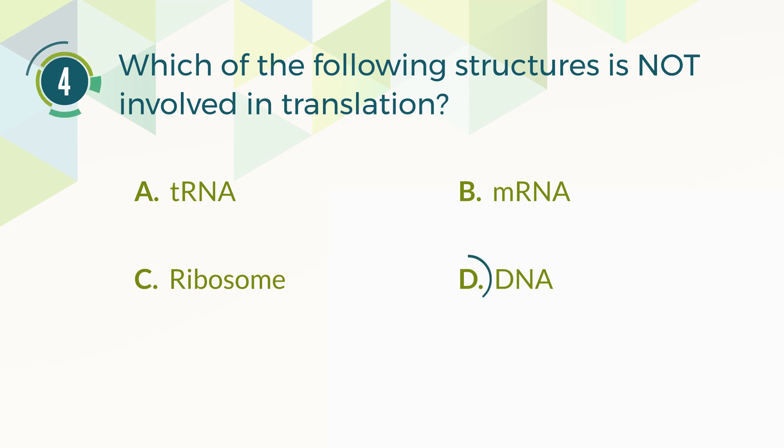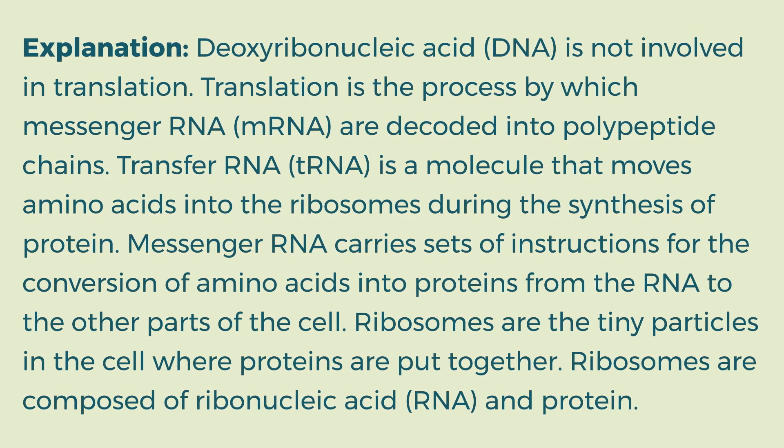The correct answer is D. DNA. Explanation: Deoxyribonucleic acid (DNA) is not involved in translation. Translation is the process by which messenger RNA (mRNA) is decoded into polypeptide chains. Transfer RNA (tRNA) is a molecule that moves amino acids into the ribosomes during the synthesis of protein. Messenger RNA carries sets of instructions for the conversion of amino acids into proteins from the RNA to the other parts of the cell. Ribosomes are the tiny particles in the cell where proteins are put together, composed of ribonucleic acid (RNA) and protein.